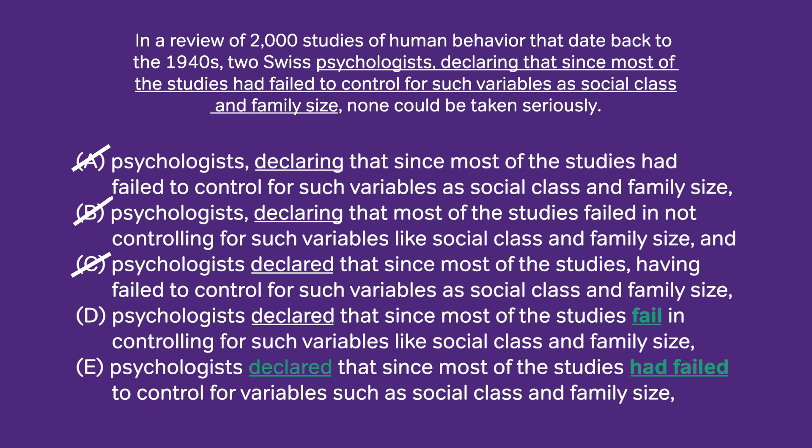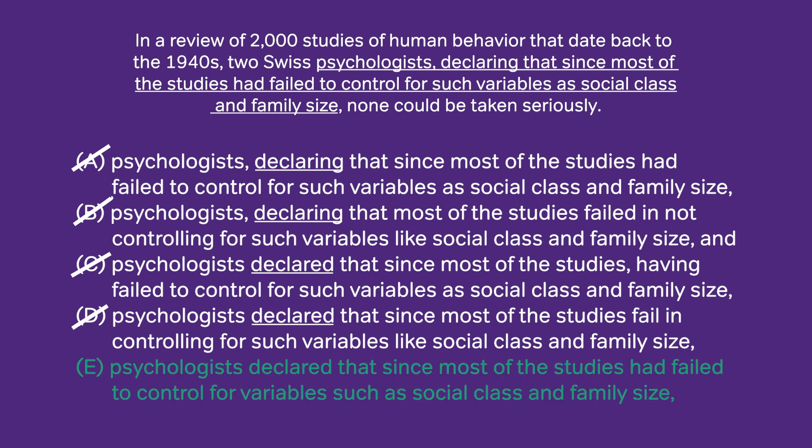Another difference is the preposition that follows: 'fail to' versus 'fail in.' When you fail in something, that means you're doing it but not doing a very good job of it — you fail in the process. 'Fail to do something' means you simply don't do it. These folks didn't control for variables such as social class and family size. It doesn't sound like they were trying and did a bad job — it sounds like they simply did not do it. If they did not do it, what we need is 'fail to.' So for a variety of reasons, E is the correct answer.